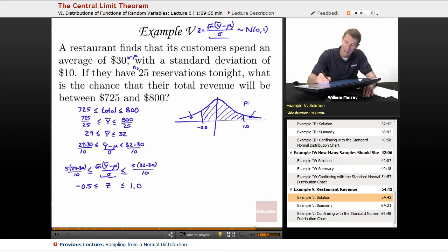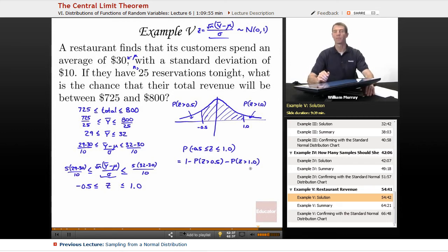But those are not the same because 0.5 and 1.0 are not symmetric. So this is the probability that z is greater than 1.0. This is the probability that z is less than negative 0.5, but that's also the same as z being bigger than 0.5. And so what I really want here is my probability that z is between negative 0.5, 0.5, and 1.0. Let me write that a little more clearly. Negative 0.5 and 1.0. But what I can do is I can subtract off the two tails to get that probability.